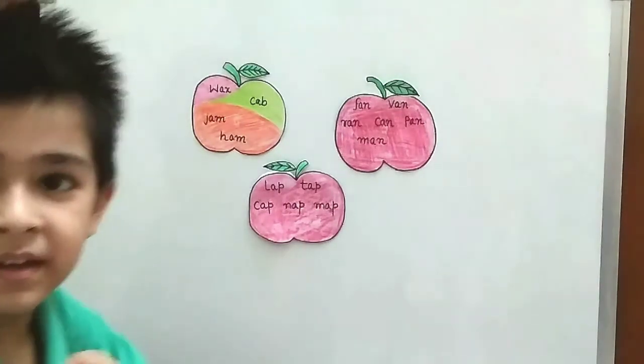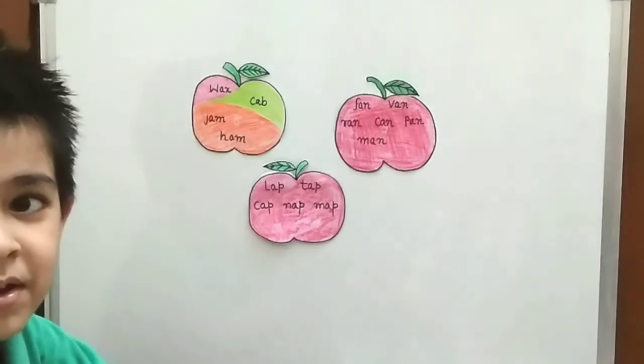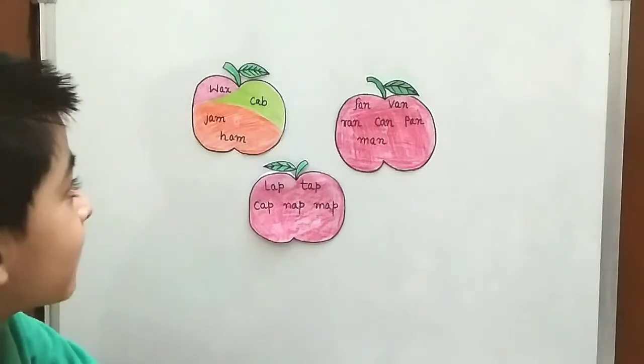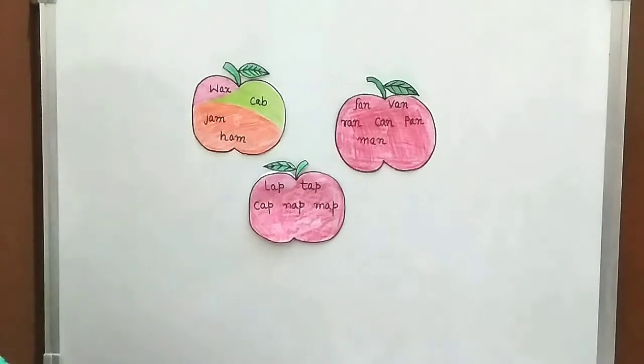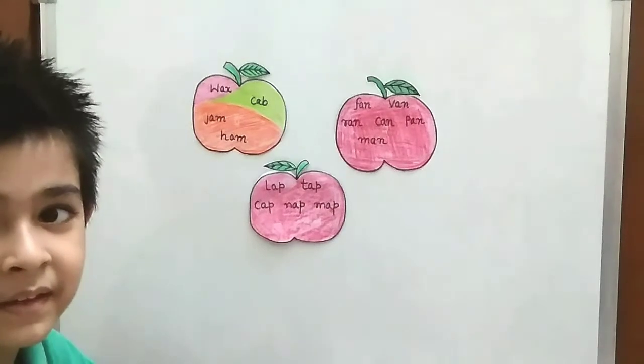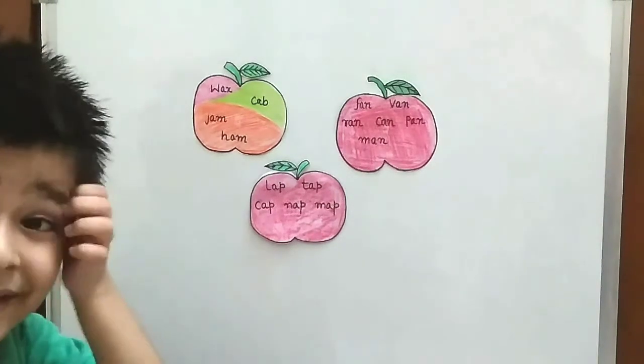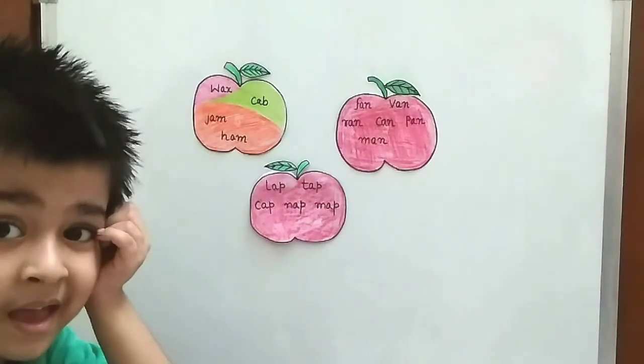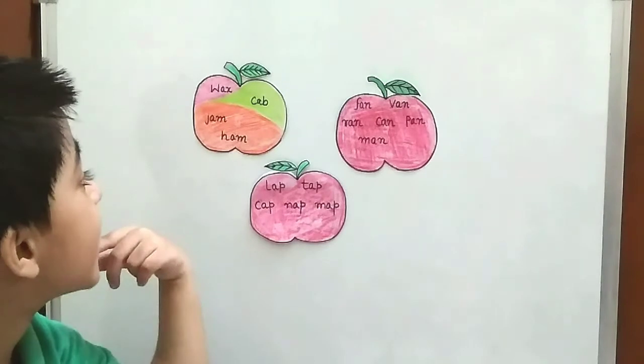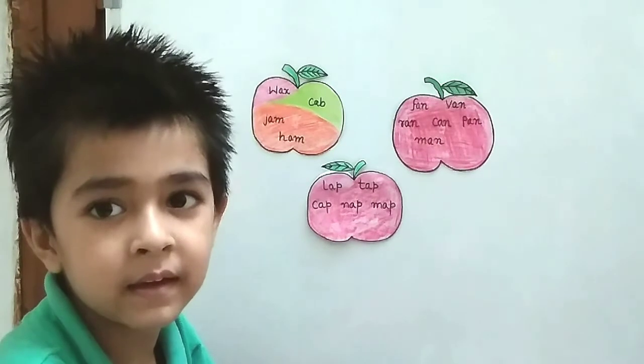Kid, do you know why this apple is of different color? No. I tell you. This apple is of different color because here we are using three different families. First word is wax, W-A-X, wax is from X family. Next is C-A-B, cab. Cab is of AB family, right? And rest two words are from AM family. J-A-M, jam. H-A-M, ham. Now you understood? Yes. Okay, let's continue.